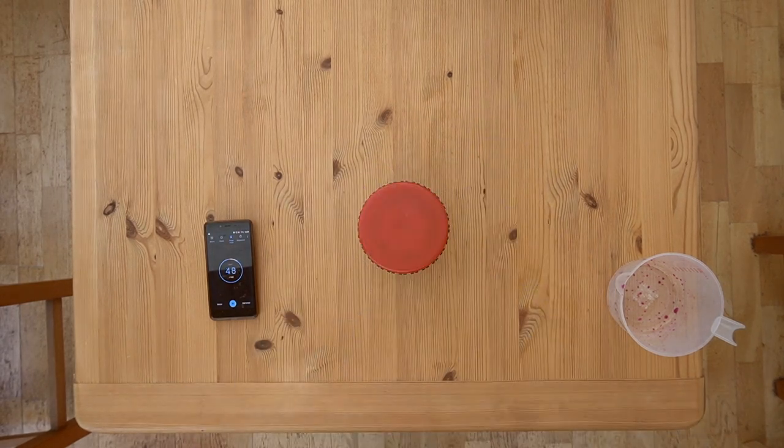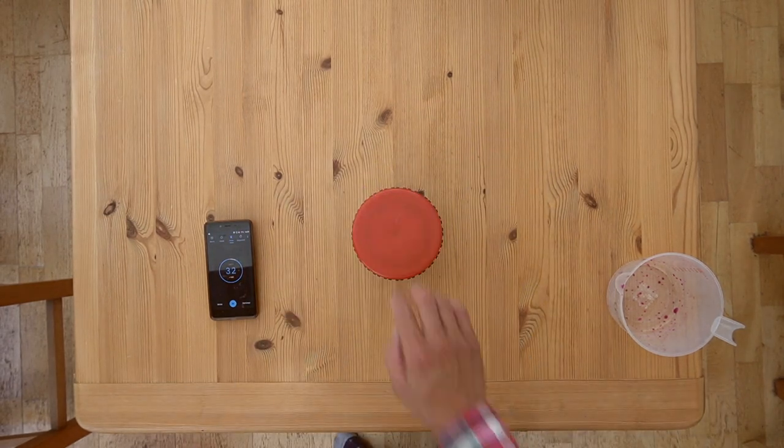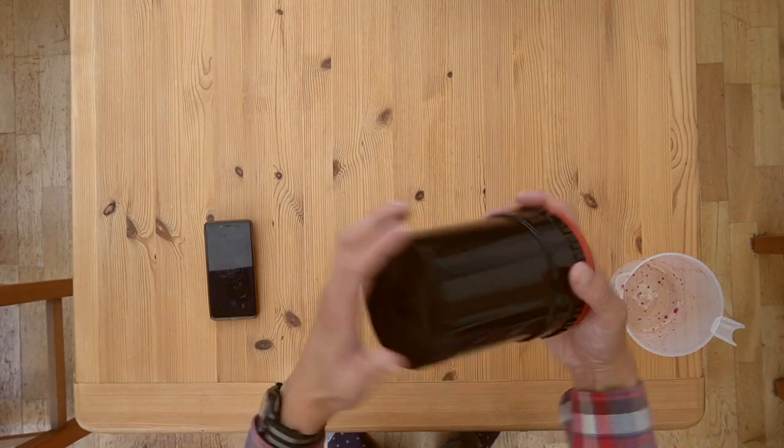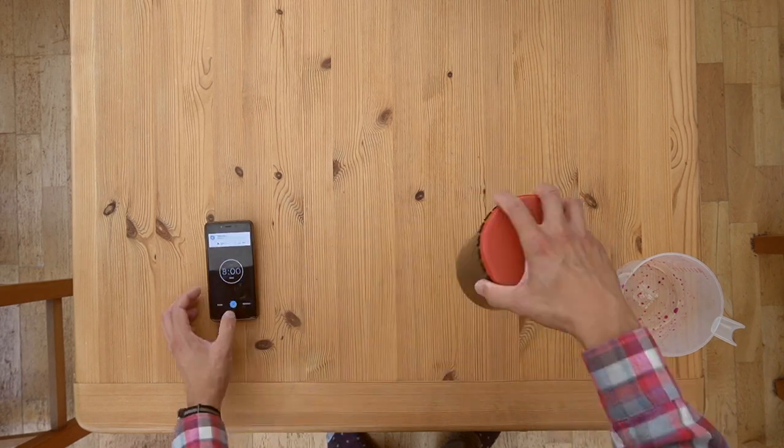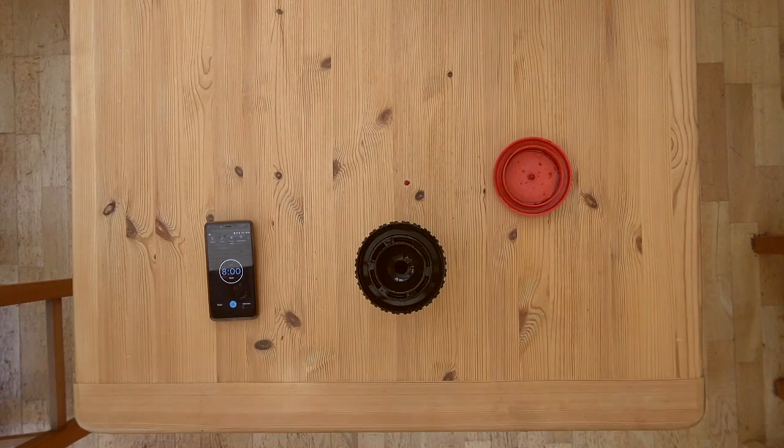For the bleaching bath, I've agitated the tank for 30 seconds in the first minute, 10 seconds every minute after and then the last 30 seconds.